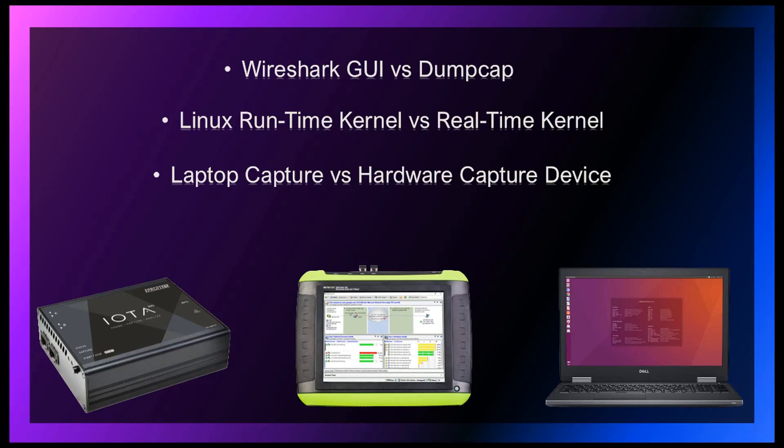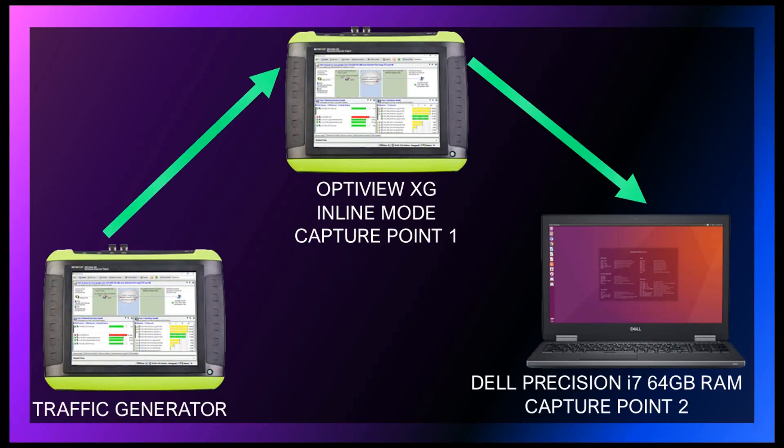I'm also going to compare the capture methods on a laptop versus a hardware-based capture device. In our lab we have two Netscout OptiView XGs and a Dell laptop. These OptiView XGs are dedicated hardware-based capture devices and traffic generators, more than capable of capturing and generating traffic at 1 gigabit and 10 gigabit full line rate.